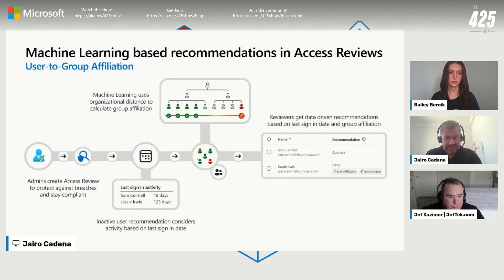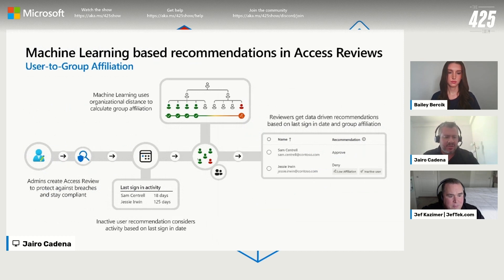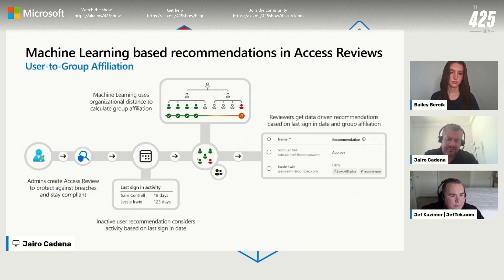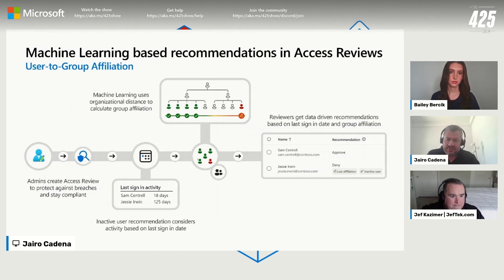On those same lines, when we bring insights, we have these machine learning based recommendations in access reviews. This is to reduce what we call reviewer fatigue. How many of you might have received a lot of review emails that you need to take care of? There's the risk of reviewer fatigue where you just approve automatically because there's a lot to approve. Bringing those insights and surfacing things that may not be obvious to you as a reviewer will allow you to be much more efficient when you are certifying access.